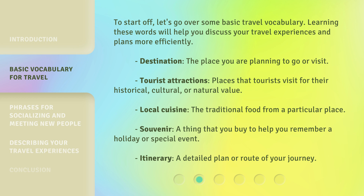Destination: the place you are planning to go or visit. Tourist attractions: places that tourists visit for their historical, cultural, or natural value. Local cuisine: the traditional food from a particular place. Souvenir: a thing that you buy to help you remember a holiday or special event. Itinerary: a detailed plan or route of your journey.